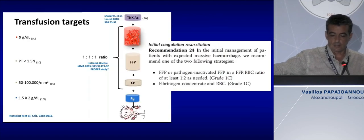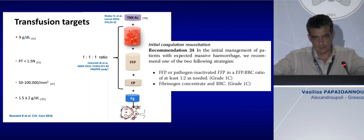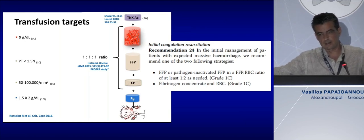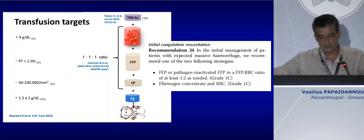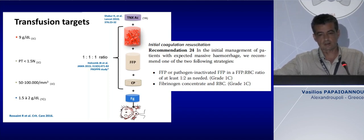Transfusion strategies have remained more or less the same across the last two guideline publications. We need a transfusion trigger of approximately 9 to 10 g/dL for hemoglobin, PT and PTT less than 1.5 times control, 50,000 to 100,000 per mL of platelets, and 1.5 to 2 grams per dL of fibrinogen.